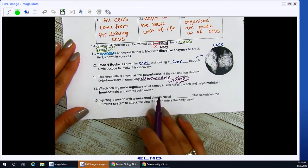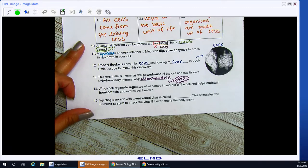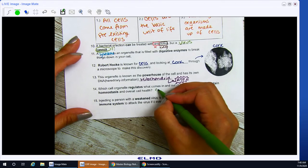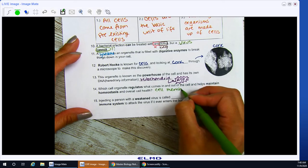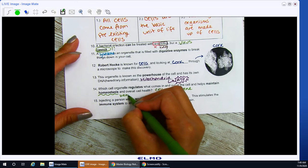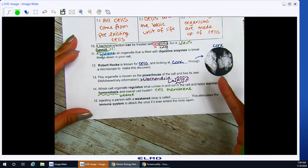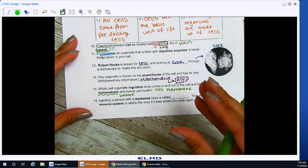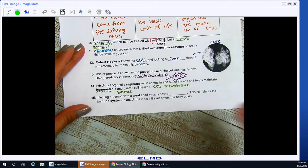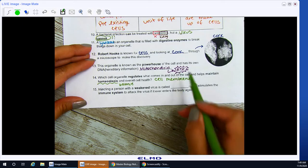Number 14. Which cell organelle regulates what comes in and out, and helps maintain homeostasis, and overall cell health? This is your cell membrane. Remember that homeostasis means to be in balance. Okay, you don't want too much water in your cell, because it can lice or burst. You don't want too little in your cell, because now it's dehydrated, and that's not healthy. You don't want too much sugar in your cell, that's not good. And you don't want too little sugar inside your cell, because now I can't make enough energy, ATP.